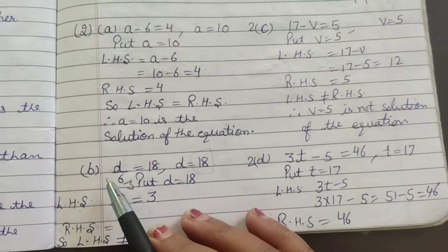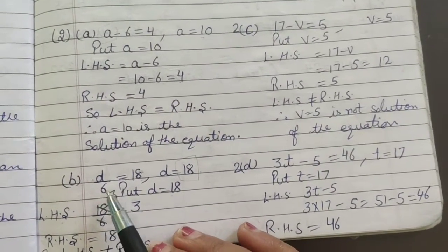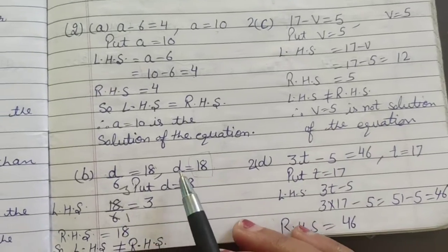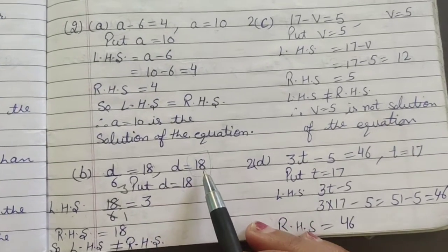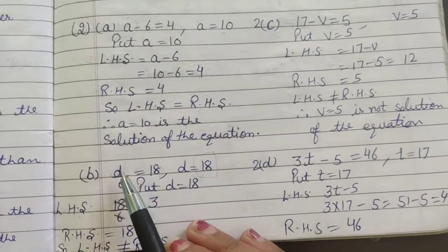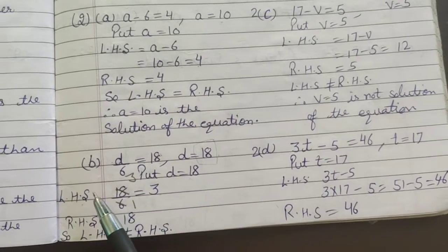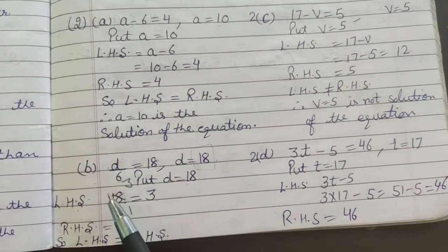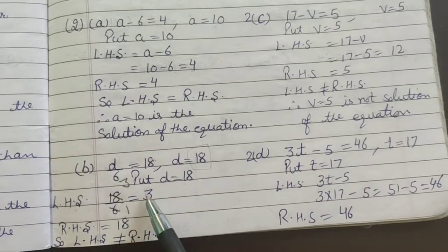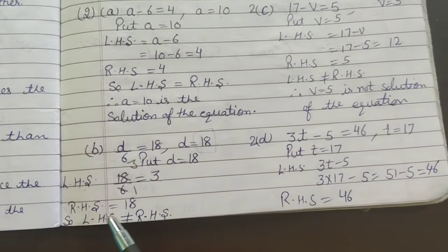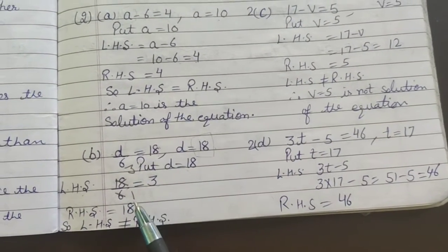Same with part b, d by 6 equals 18. And the value of d we have is 18. Means in place of d we have to put 18. So left hand side, in place of d I wrote 18. 18 divided by 6 is 3. And in the right hand side we have 18, not 3.